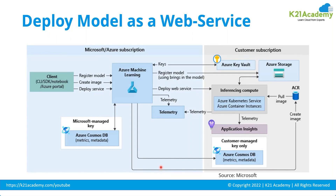These are all ways your model is going to be consumed once deployed. If it is a real-time use case, you go for real-time inferencing and deploy real-time endpoints. For batch, you go for batch inferencing and batch endpoints. Real-time means as soon as the data is captured at the source, you take it and make a prediction using your trained model. For batch, you capture the data and run your batch pipeline at a scheduled time.